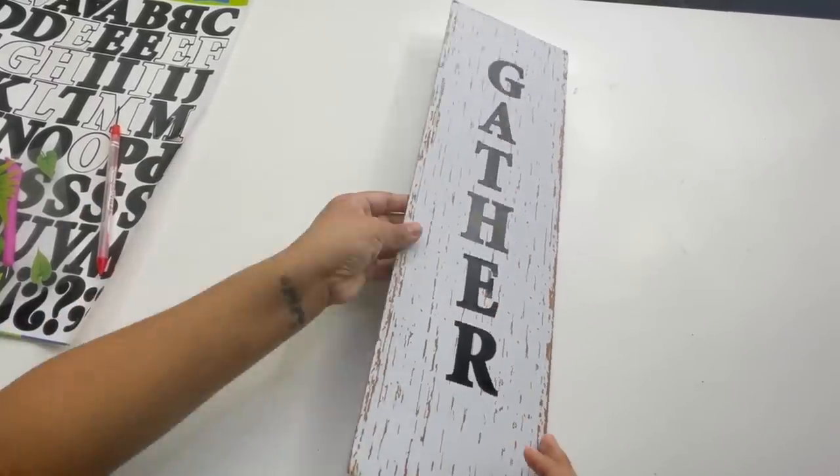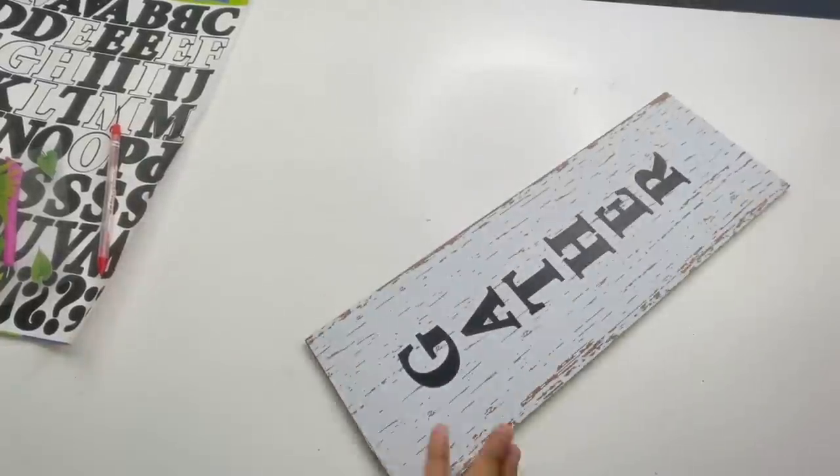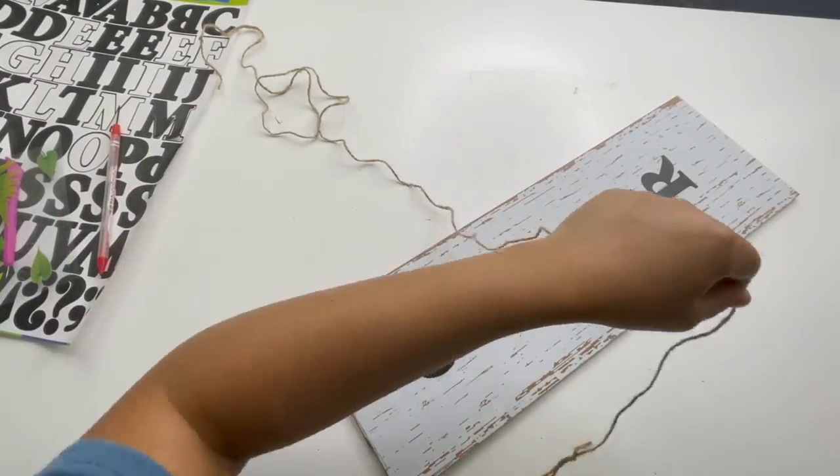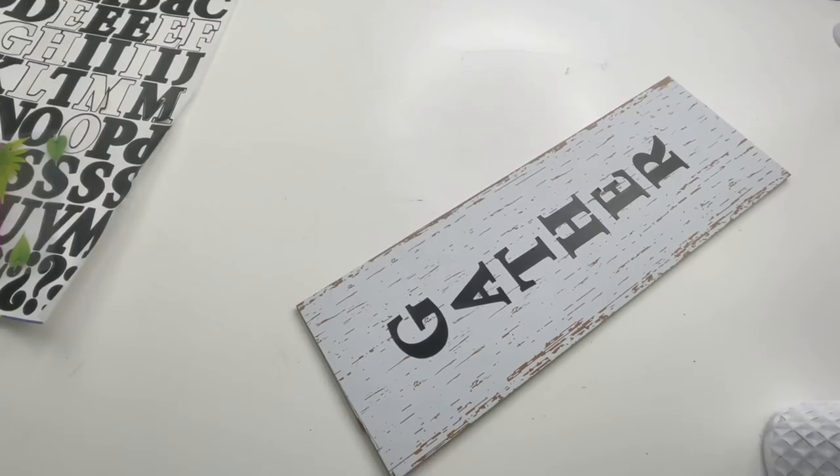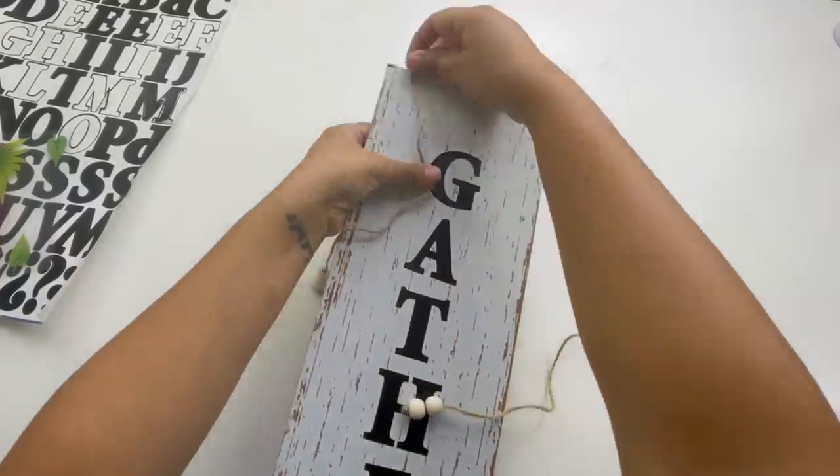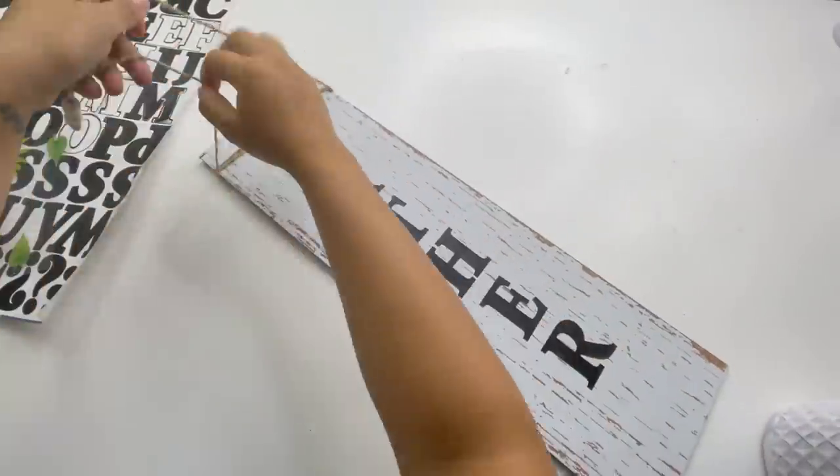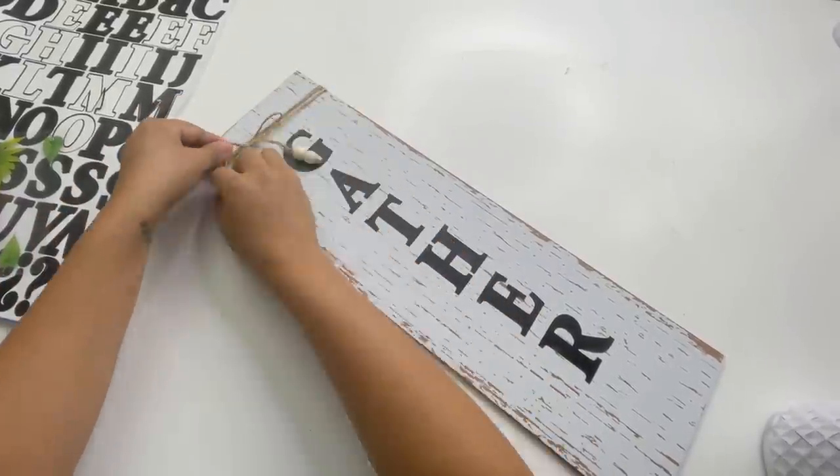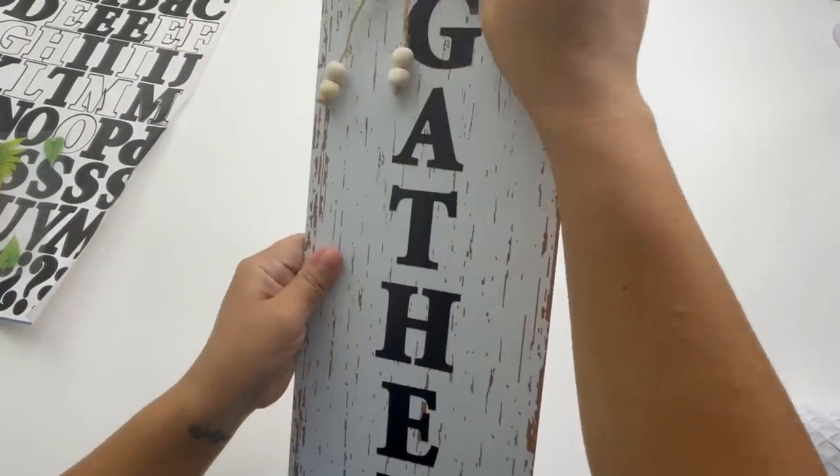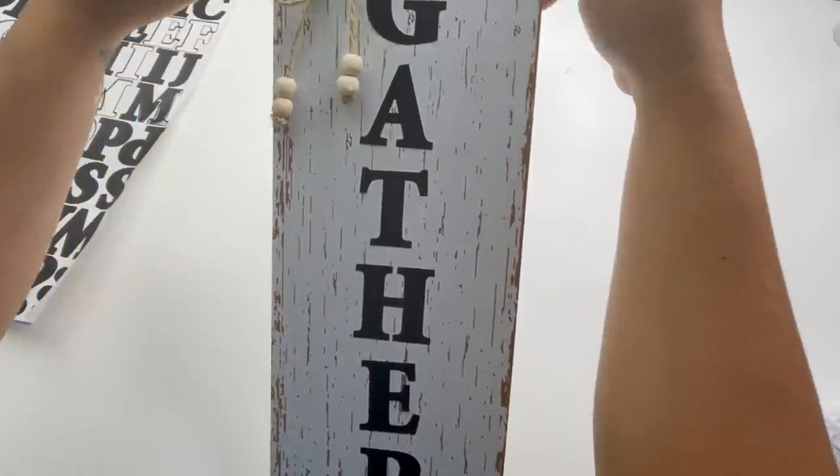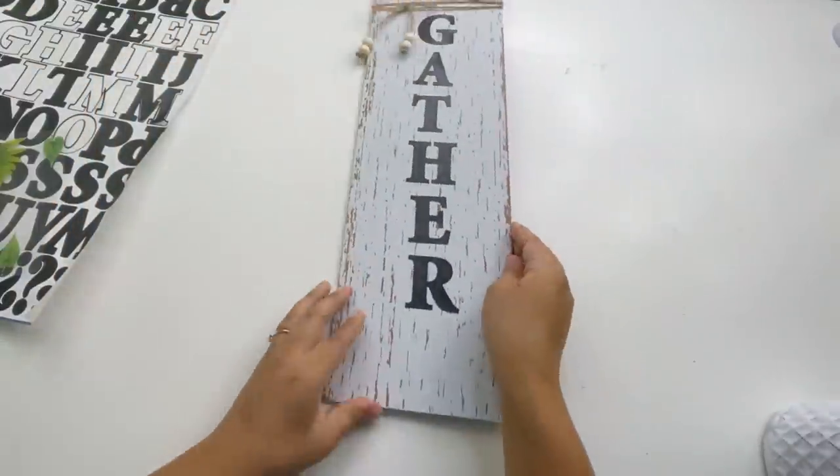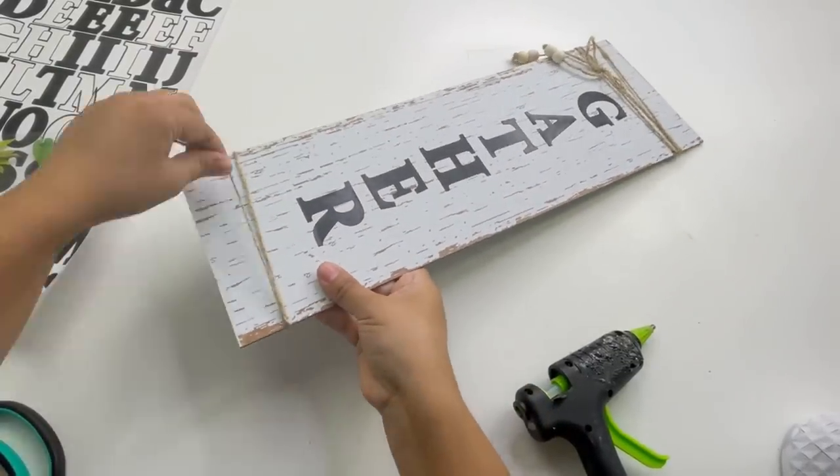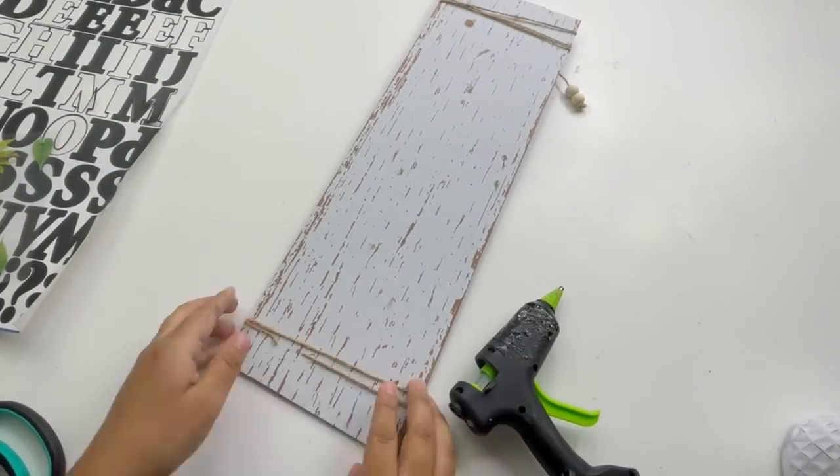And this is how it looks. Now to decorate my sign a little more I put two beads on each side of a piece of string and I wrapped it at the top. With another piece of string I just wrapped it at the bottom. And that was it for this quick and easy gather sign which I think it turned out beautiful.